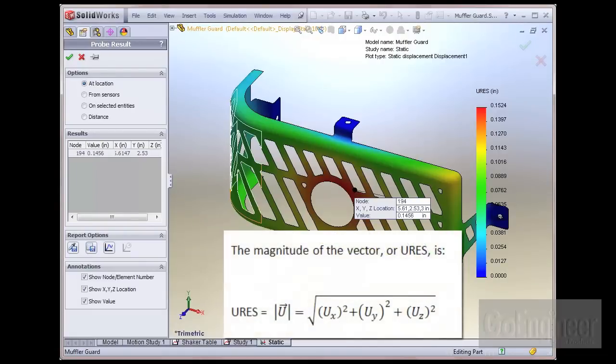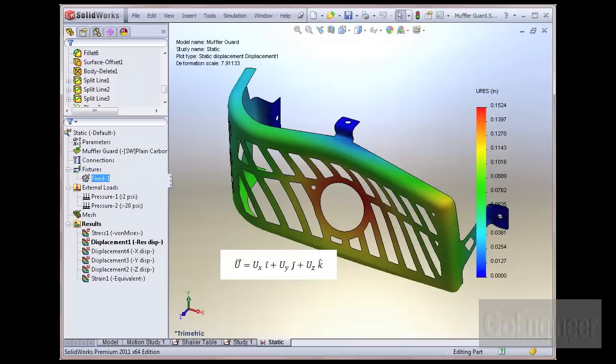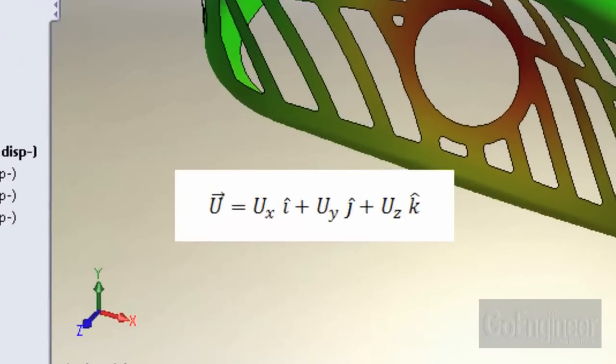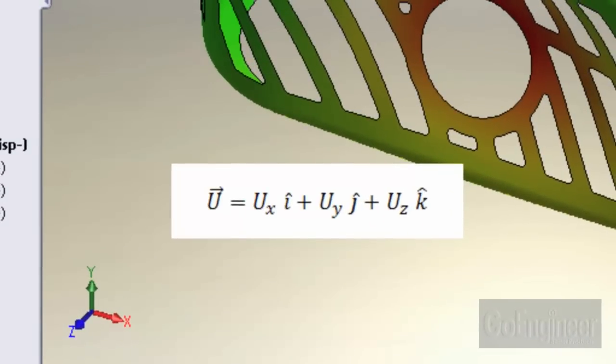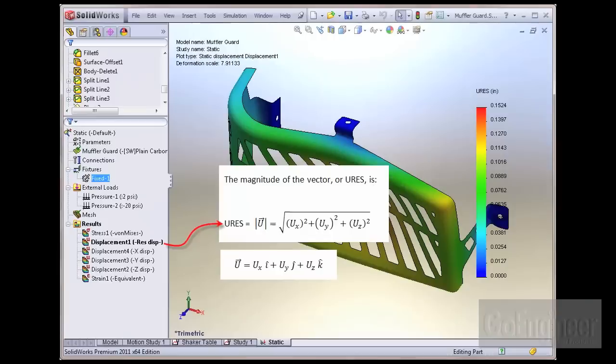The displacement resultant, or URES, is calculated by squaring each of the terms, adding them, and taking the square root. This calculation is identically the same as determining the magnitude of a vector. The simulation-calculated displacement vector in terms of i, j, k unit vectors is shown here.